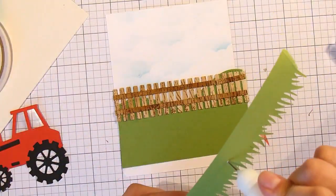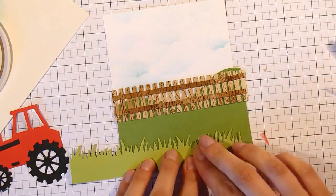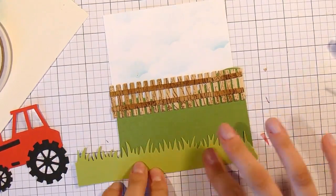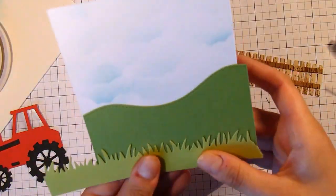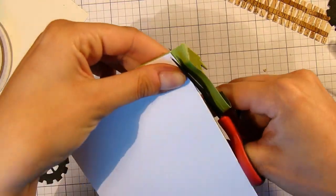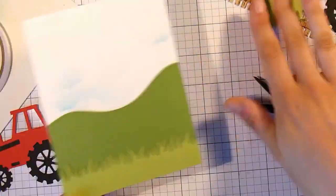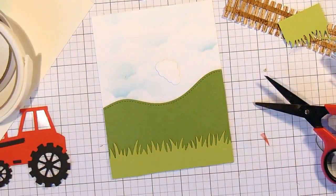Oh I thought about using some foam tape but then I knew that I wanted to pop up the tractor so it would collide a little bit. So I'm just using liquid glue for the grass down the bottom as well. There are bits overhanging so turn the card over and trim them off. This card is a 4.25 by 5.5 inch card and it will take up the whole card front.